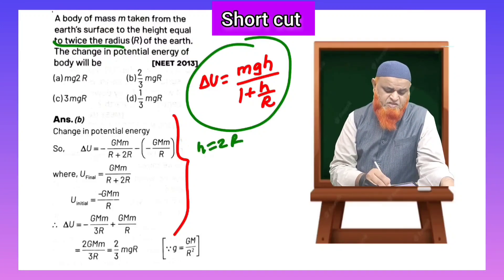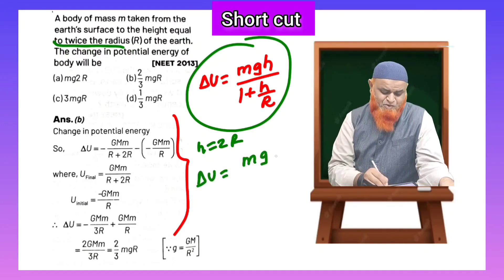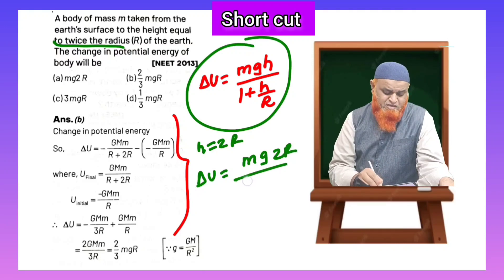That's it, you just write h is equal to 2r, getting the answer in fraction of seconds. So delta U is equal to mg into 2r.